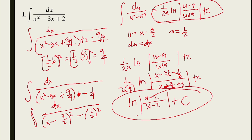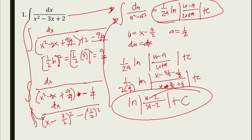So why do we need to use completing the square? We use it when we cannot directly show or apply a pattern formula for inverse functions. We need to complete the term so we can make use of this pattern formula to solve the problem.